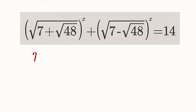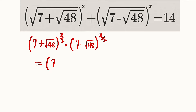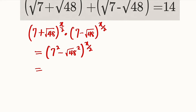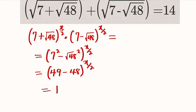From the left hand side, we have 7 plus root of 48 all raised to the power of x divided by 2. We want to multiply that by 7 minus square root of 48 all to the power of x divided by 2. Since we have common exponents, we can multiply the bases and give them a single power. This equals 7 squared minus root of 48 squared, raised to the power of x divided by 2 — a difference of two squares. That gives us 49 minus 48 raised to the power of x divided by 2. Since 49 minus 48 equals 1, and 1 to any power is still 1, this product equals 1.